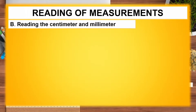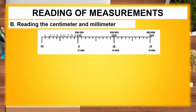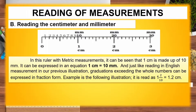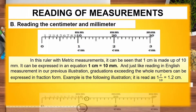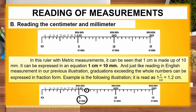B. Reading the Centimeter and Millimeter. In this ruler with metric measurements, it can be seen that one centimeter is made up of ten millimeters. It can be expressed in an equation: one centimeter equals ten millimeters. Just like reading in English measurement, graduations exceeding the whole numbers can be expressed in fraction form. For example, the following illustration is read as one and two tenths, equals 1.2 centimeters.